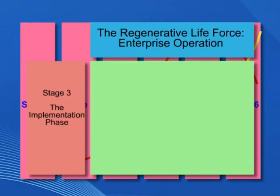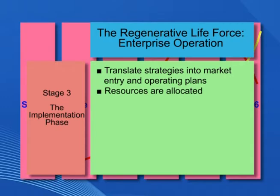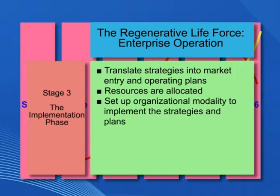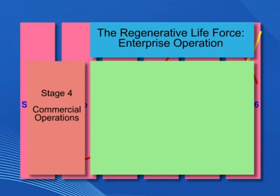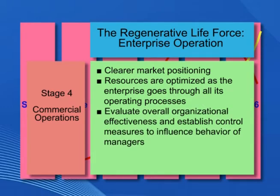At the next stage, the enterprise operators translate the strategies into market entry and operating plans. Resources are allocated. The organizational modality to implement the strategies and plans is set up. At the commercial operation stage, there is clearer market positioning. Resources are optimized as the enterprise goes through all its operating processes. The enterprise operators evaluate their overall organizational effectiveness and establish control measures to influence the behavior of all managers.